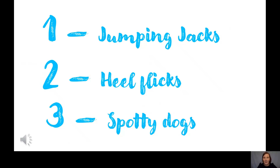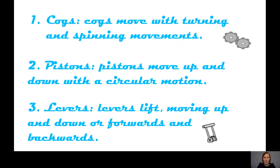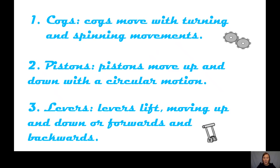Now we're going to construct our dance. We're going to think of three different elements: cogs, pistons, and levers. Cogs move with turning and spinning movements. Pistons move up and down in a circular motion — remember that video from the beginning? And levers lift, moving up and down, forwards and backwards.